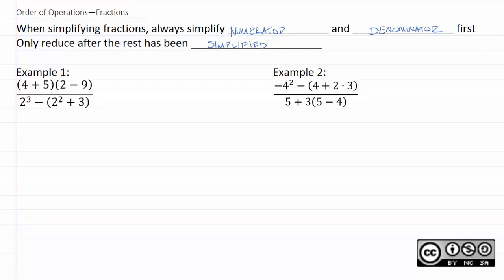We'll simplify the top, we'll simplify the bottom, and then we'll take the resultant fraction and put it in lowest terms. So, for our first example, it's a good idea to actually write the top and the bottom separately before you even do anything, so that you have a start point that is clearly defined.